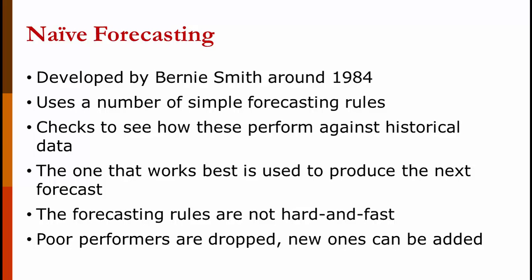Back in 1984, before computers were common, a man named Bernie Smith developed a forecasting technique called naive forecasting. These days it's not very good, but really what it does is it sets a floor. Any technique you use should be better than this. Naive forecasting uses a bunch of simple rules. Demand is going to go up 5% per period. Demand is going to remain constant. Demand is going to go up 10% in the winter and down 5% in the spring. And you may have multiple rules. You've checked them over time and keep the ones that work well and discard the ones that don't work well. And you may use different rules for different products.